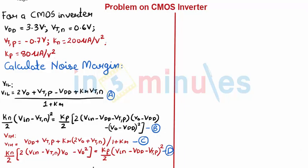Welcome to In Five Minutes. The agenda of this clip is to solve a problem on CMOS inverter and identify the noise margin. For a CMOS inverter, VDD is given as 3.3 volts, threshold voltage of NMOS transistor is 0.6 volts, threshold voltage for PMOS transistor is minus 0.7 volts, KN equals 200 micro ampere by volt square, and KP equals 80 micro ampere by volt square.